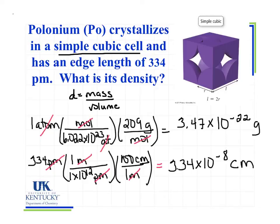Now what I need to do is find the volume, and that's simply going to be the cube of that number, so the edge length cubed. So my volume will be equal to 3.73 times 10 to the minus 23rd. But now my units are centimeters cubed because I took the cube of that edge length.